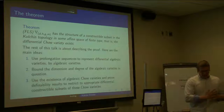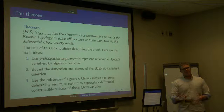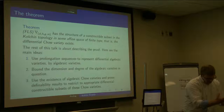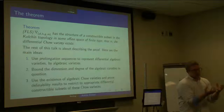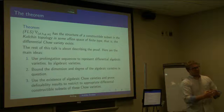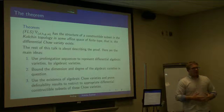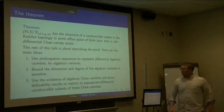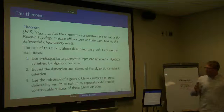I prefer to think of the differential Chow variety as a differential subvariety of some space of Chow varieties. Normally Chow varieties are Zariski-closed sets of some finite type, but now I think of them as varieties with the Kolchin topology and look at a differential subvariety of that space. That's the sort of object we're looking at.